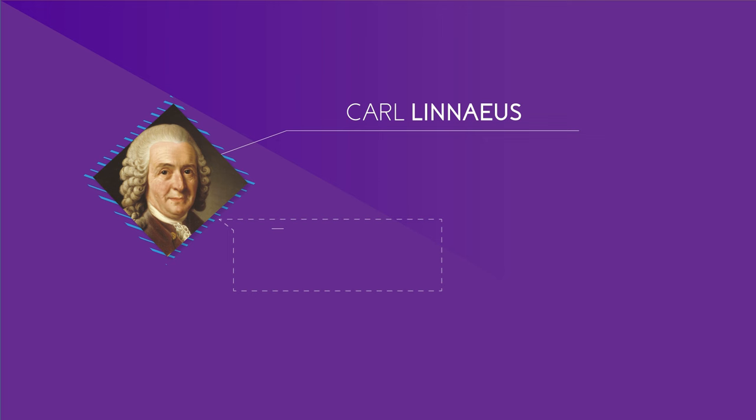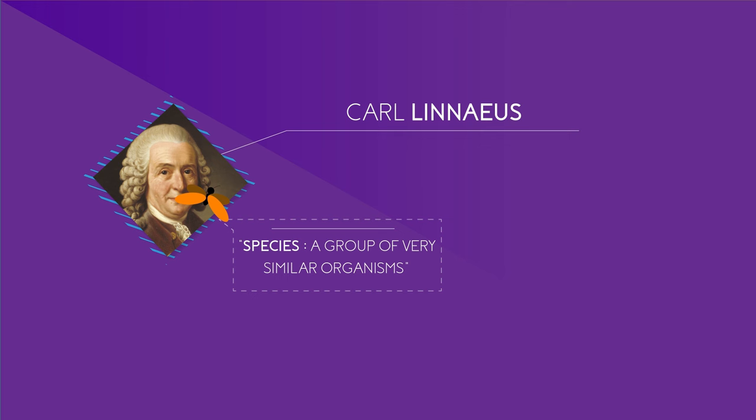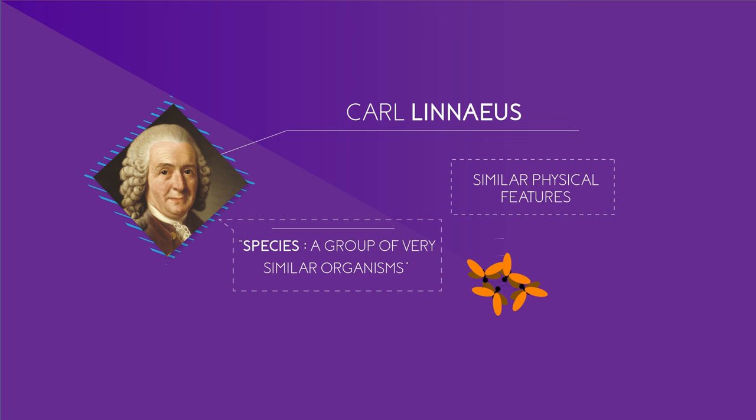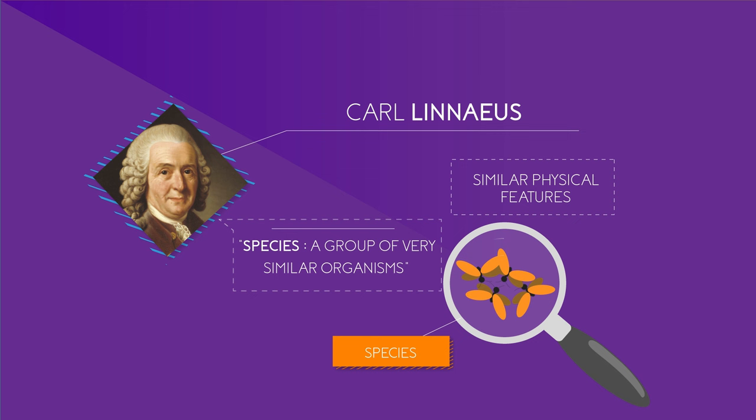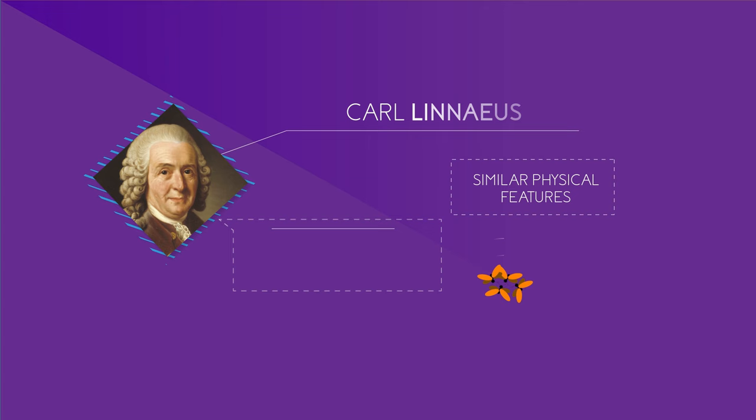Linnaeus was interested in classifying all living things and he came up with a system for grouping organisms and identifying the relationships between them based on their physical features. His system placed organisms with the most similar characteristics together in a group he called the species. This species group was then incorporated into ever larger groups based on shared physical features, right up to the level of kingdom.